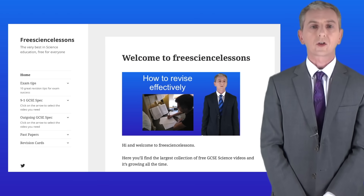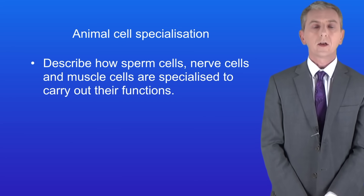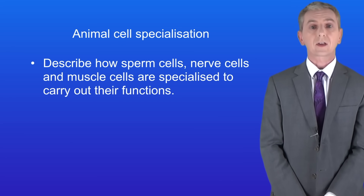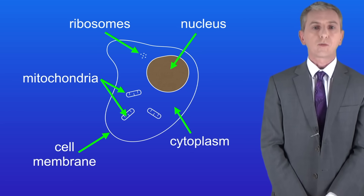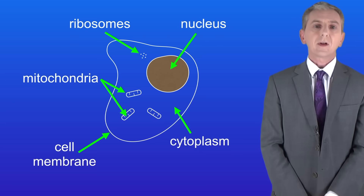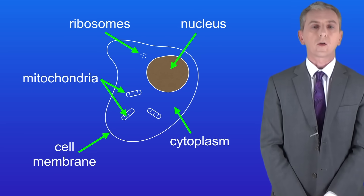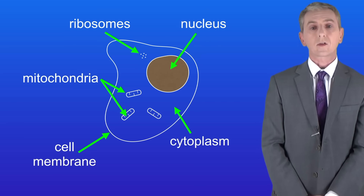Hi and welcome back to freesciencelessons.co.uk. By the end of this video you should be able to describe how sperm cells, nerve cells and muscle cells are specialized to carry out their functions. Now all of these are animal cells. We've already seen the structure of an animal cell in a previous video. This diagram shows you a general animal cell. Animal cells can look different to this depending on their function, and that's what we're looking at in this video, so let's get started.